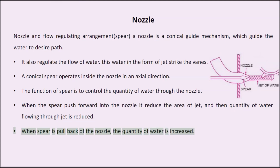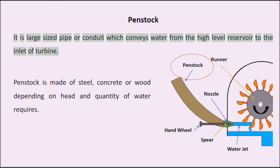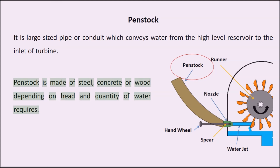Penstock: It is a large-sized pipe or conduit which conveys water from the high-level reservoir to the inlet of the turbine. Penstock is made of steel, concrete, or wood depending on the head and quantity of water required.